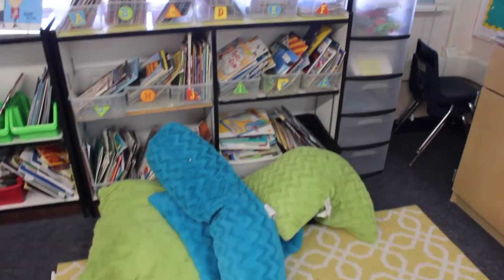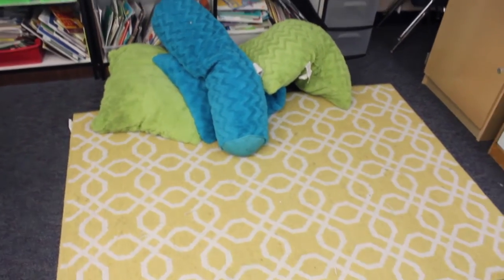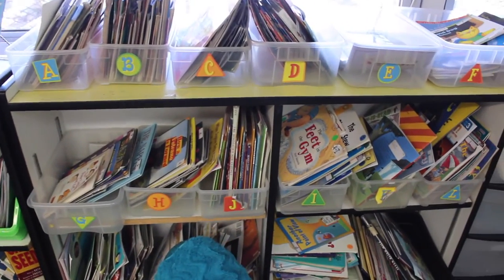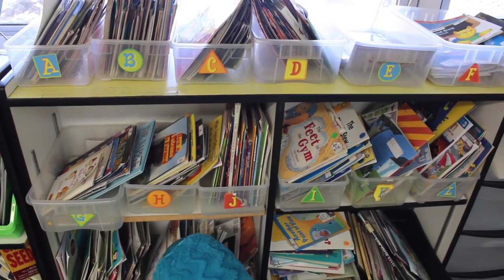So my library is a hot mess. I have my rug and pillows. They're DRA leveled. Not AR, I'm sorry. DRA. They're DRA leveled. So A, B, C, D, E, F, G.